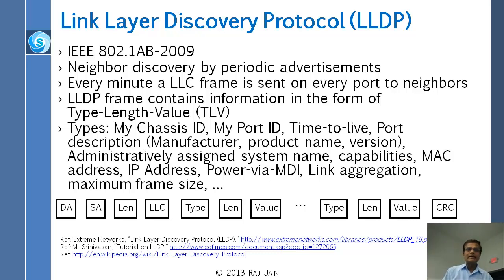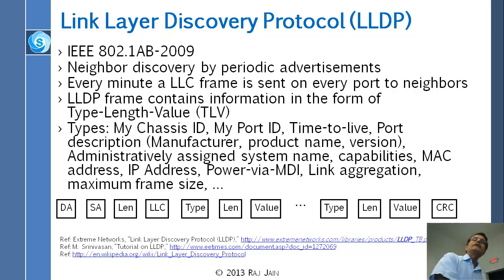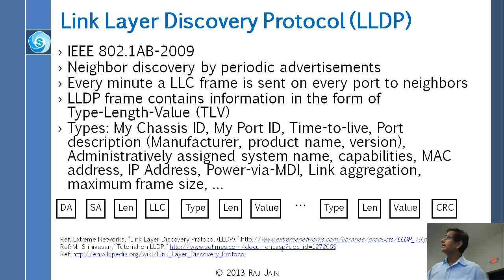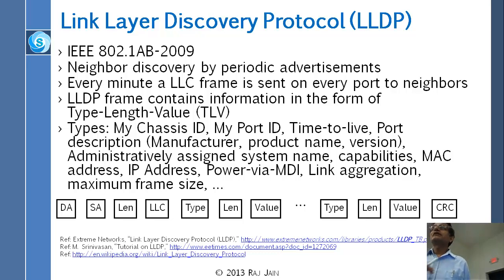The next protocol is LLDP. Ethernet has so many options and features that a protocol is needed to manage them automatically. You can ask a switch: do you implement RSTP? Do you do link aggregation? Do you do VLANs? That protocol is called LLDP — Link Layer Discovery Protocol. It is a neighbor discovery protocol: you can ask your neighbors what they can do and what their capabilities are — first finding that there is a neighbor, and then finding out what they support.